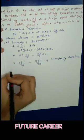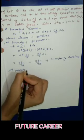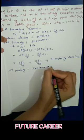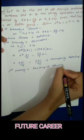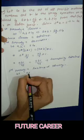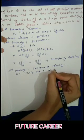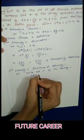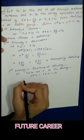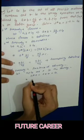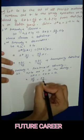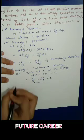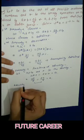Third property — Existence of Identity: let a belong to G and e be the identity element. Then a★e = e★a = a. Applying the star property: ae/7 = ea/7 = a. Since LHS = RHS, the identity element exists.